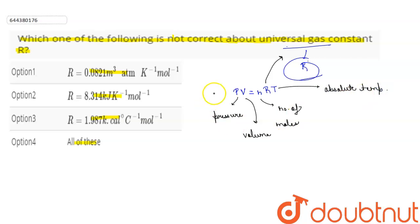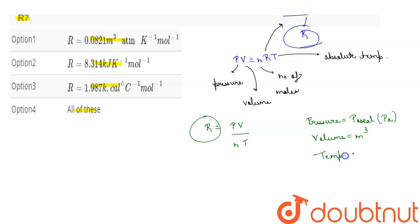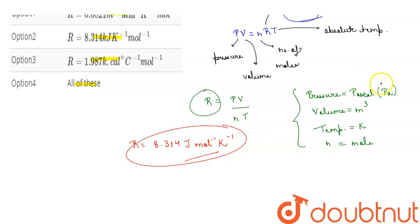From this expression we can write R = PV/nT. Now we will find the value of R in SI units. The SI unit of pressure is pascal, volume is meter cube, temperature is kelvin, and number of moles is mole. So the value of R in SI units is 8.314 joule mole inverse kelvin inverse. Pascal is also written as newton per meter square.